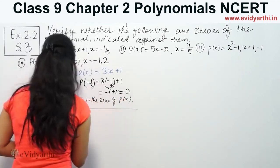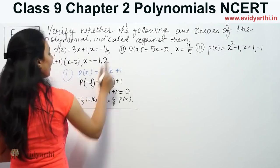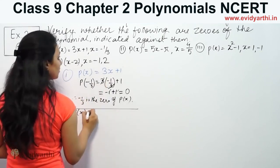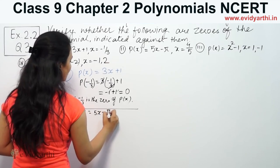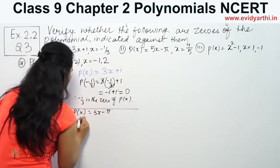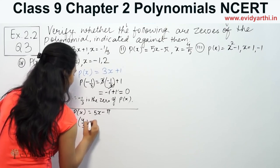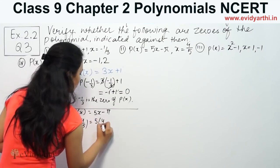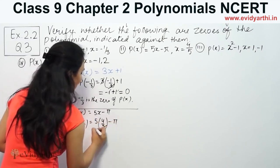Now for the second part, we have P(x) = 5x - 5. We have to check if x = 4/5. So we will put 4/5. That will be 5 × 4/5 - 5.